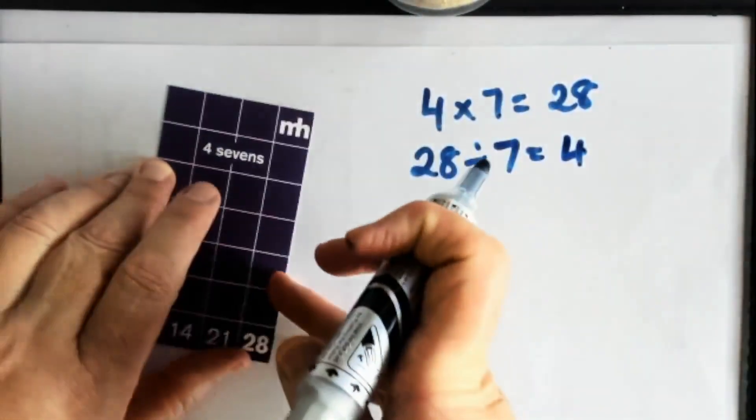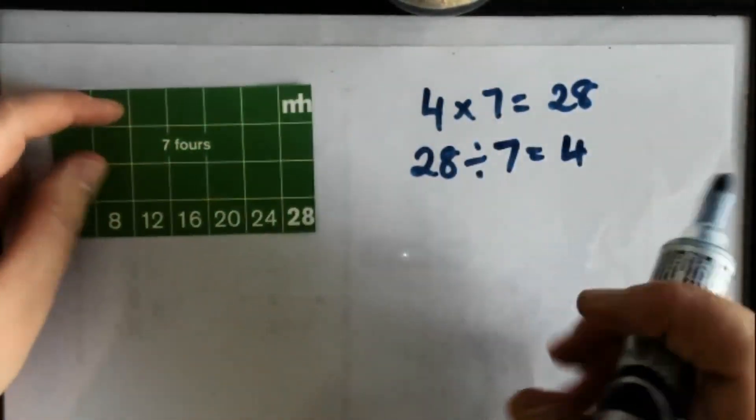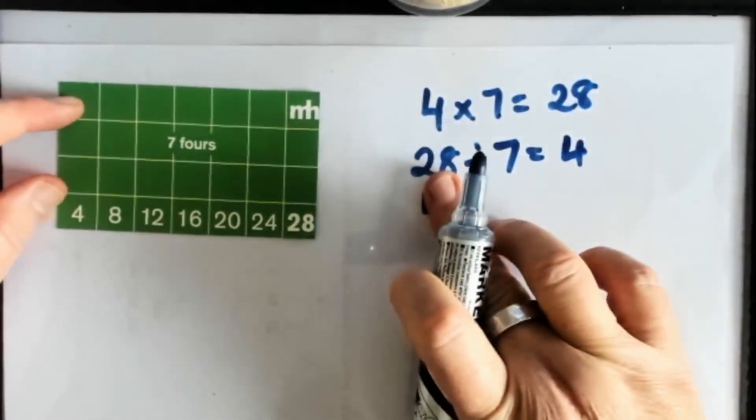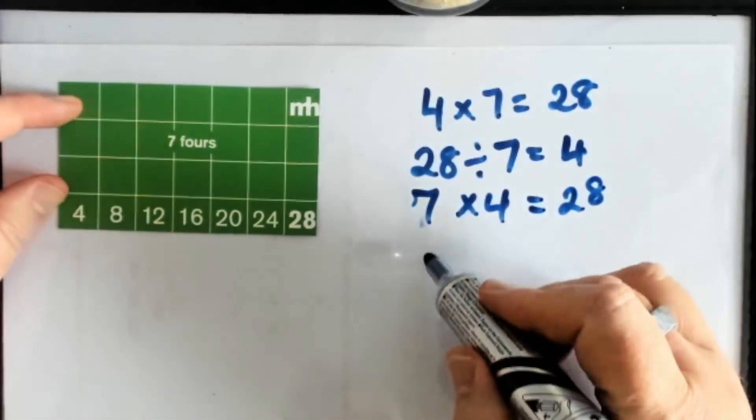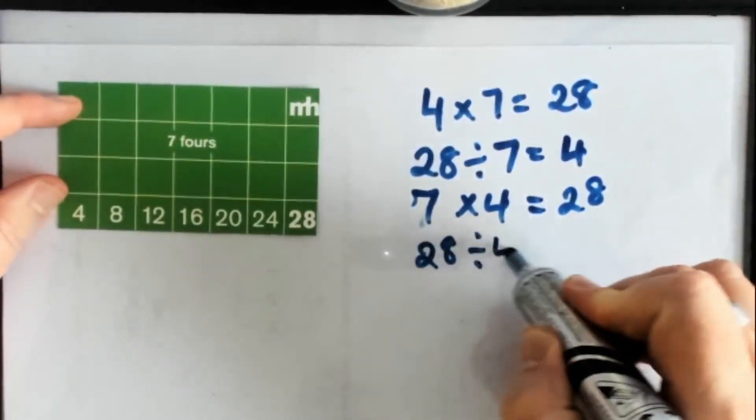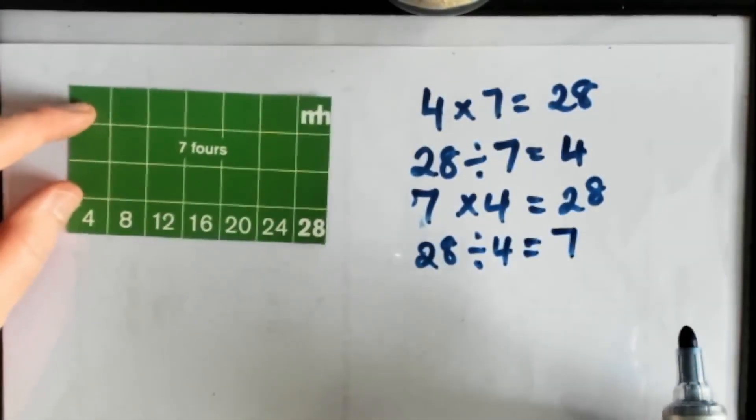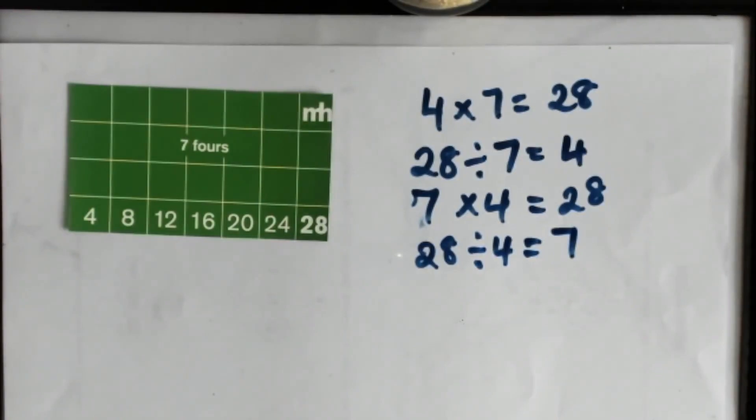If I flip my multiplicative thinking block over, I also know that now I've got 7 fours are 28 and I also know that 28 divided by 4 is 7. So there you have it, 3 for free.